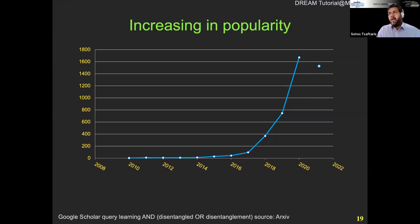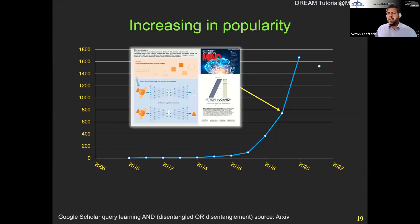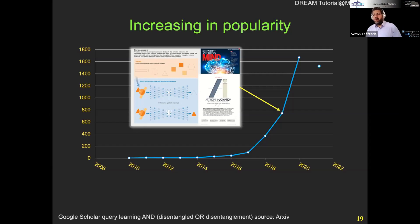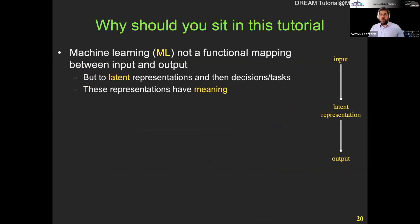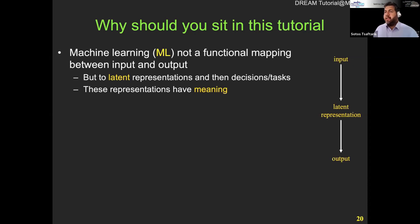Disentanglement has been increasing in popularity. This is kind of like the trend of Google Scholar queries on disentanglement and on arXiv. A few years back, Scientific American had an article about the evolution of AI and how we're going to go to general artificial intelligence, and disentanglement was a prominent feature there. The number of works is definitely increasing — we have more than 2,000 papers this year alone. By sitting in this tutorial, you will see that machine learning is not just a functional mapping between input and output — there is an internal latent space that we're trying to provide meaning to.